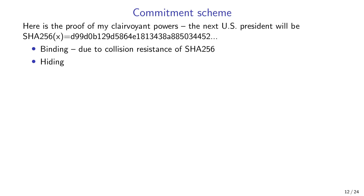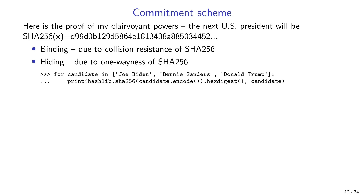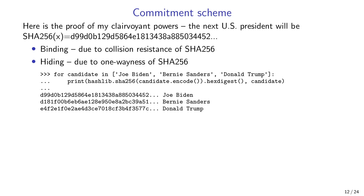Then we need the hiding property, so you cannot figure out my prediction x before I open the commitment — guaranteed by the one-wayness of SHA-256. However, we have a problem: the one-wayness property does not prevent you from checking guesses. You can simply loop over the candidate list and hash them. As shown in Python, you would find that my prediction is Joe Biden because the hash value matches.